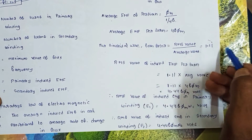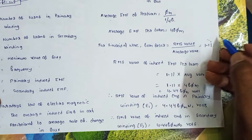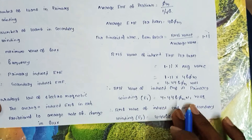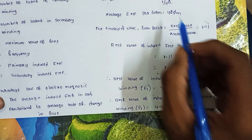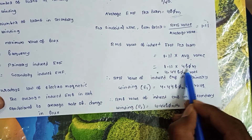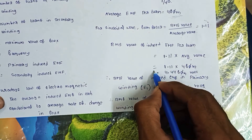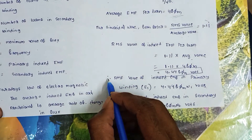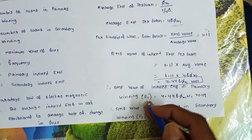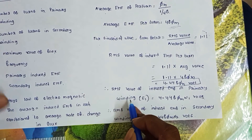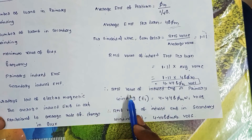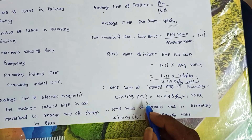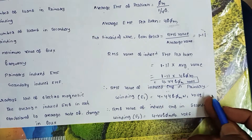The RMS value of the induced EMF is derived by multiplying the form factor by the average value: 1.11 into 4FφM, which gives 4.44FφM. So the RMS value of the induced EMF in the primary winding is E1 equals 4.44 × F × φM × N1.